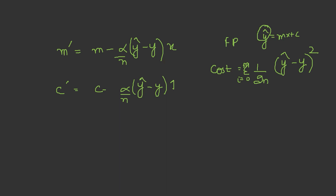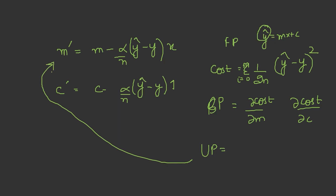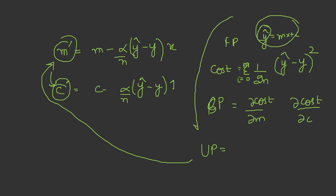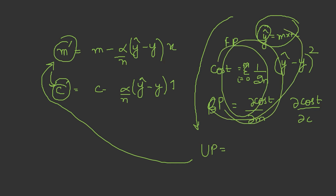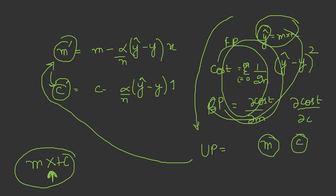We want the least value for cost, so we do backward propagation using gradient descent. We find del cost with respect to del m and del cost with respect to del c. Using these results we update our parameters, then use the updated parameters again in the equation. These iterations keep continuing until we find the most optimal values of m and c, after which our hypothesis mx plus c is ready and we can predict output values for any input.